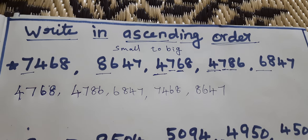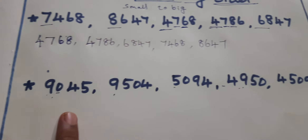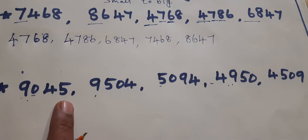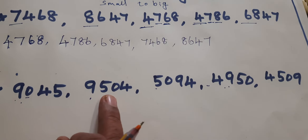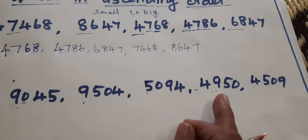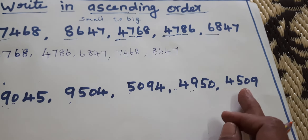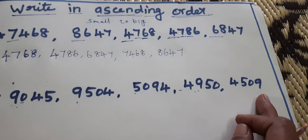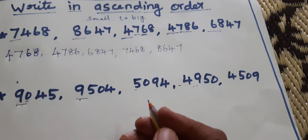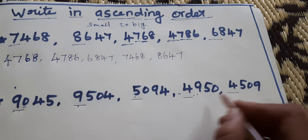Ascending Order means small to big — increasing order. Next, one more example. The numbers are: 9045, 9504, 9094, 4950, 950, 450, and 4509. Which one is the small number? Thousands place: 9000, 9000, 5000, 5000, 4000, 4000, 4000 — both 4000s are the same.